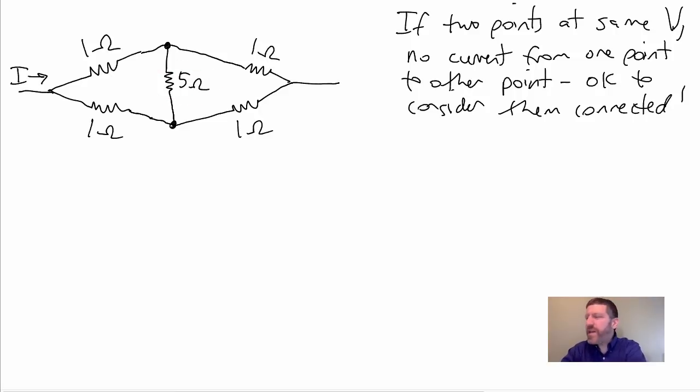And here's what it is. If two points are at the same electric potential, there will be no current traveling from one point to the other point. So we might as well just consider them equal potential connected. We might as well just consider them connected.